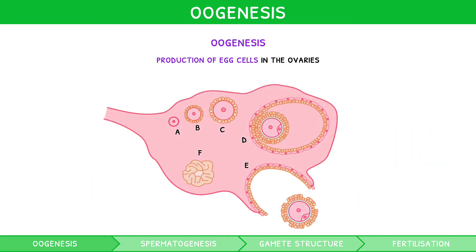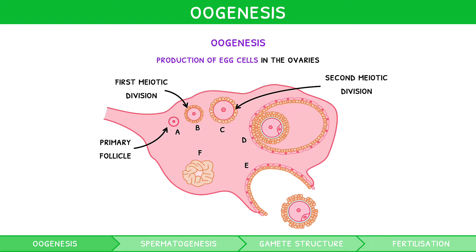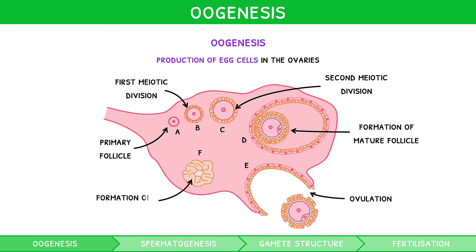Let's talk through an example. A represents the primary follicle, consisting of an oocyte surrounded by follicle cells. B represents the first meiotic division, i.e. development of primary follicles. C represents the second meiotic division, i.e. proliferation of secondary follicles. D represents the formation of the mature follicle. E represents ovulation, i.e. the release of the egg. And F represents the formation of the corpus luteum.